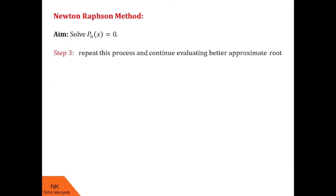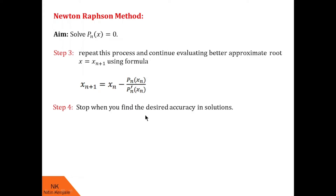In step 3, we repeat this process and continue evaluating better approximate roots using the formula xn+1 = xn − Pn(xn) / Pn'(xn). Finally, we stop when we find the desired accuracy of the solution. Now let us see some real examples.